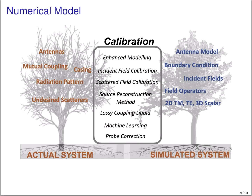The last component governing the success of nonlinear inversion is how close the simulated or numerical model is to the actual system. In the actual system we deal with antennas and mutual coupling, while the simulated system may not incorporate effects such as mutual coupling, casings, etc. There are different ways to establish this connection: enhanced modeling, scattered field calibration — where you compare measured scattered data from a known target with simulated data to construct calibration coefficients — use of a lossy coupling liquid to minimize reflections from the casing, and other techniques such as machine learning, probe correction, and source reconstruction methods.